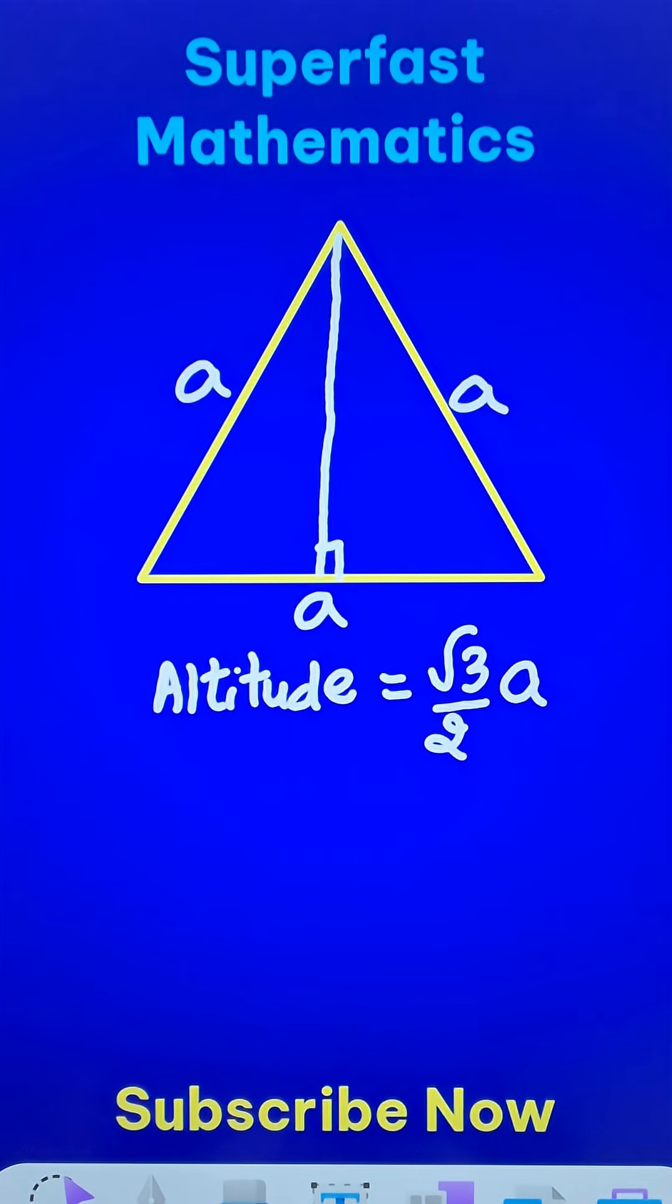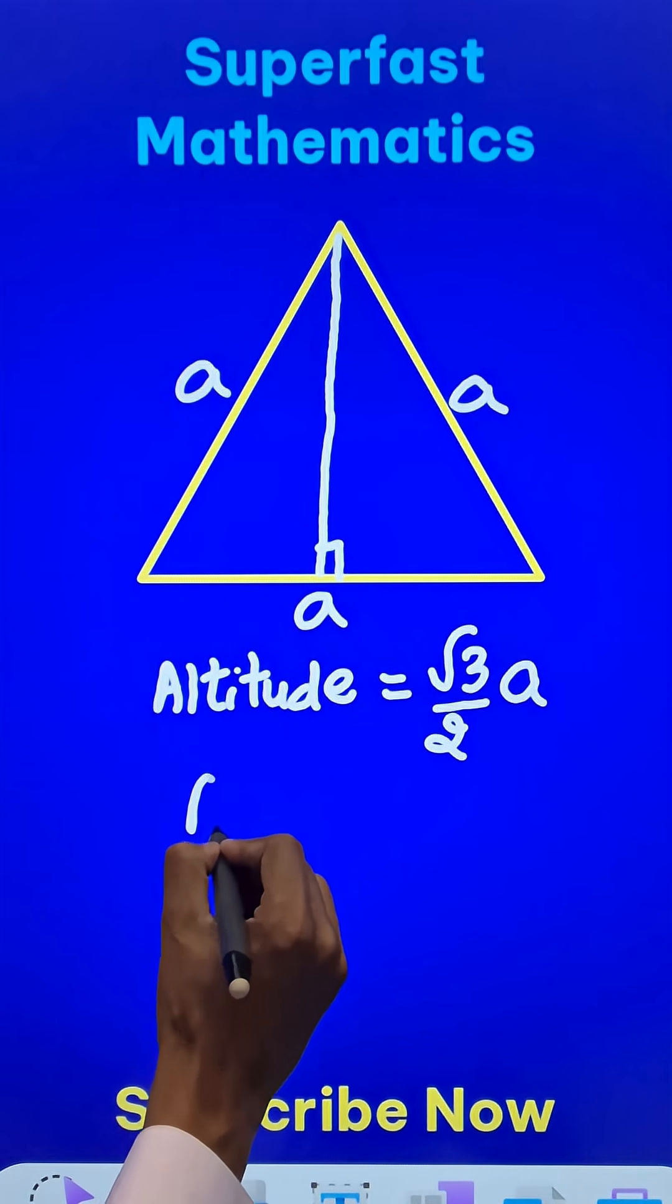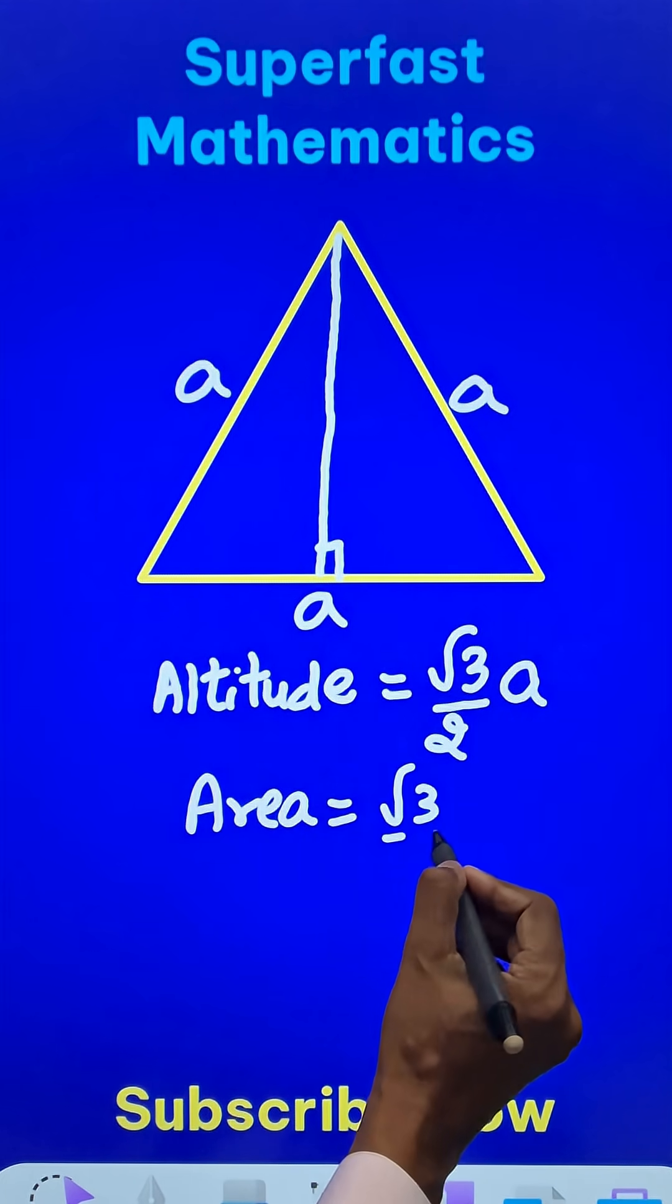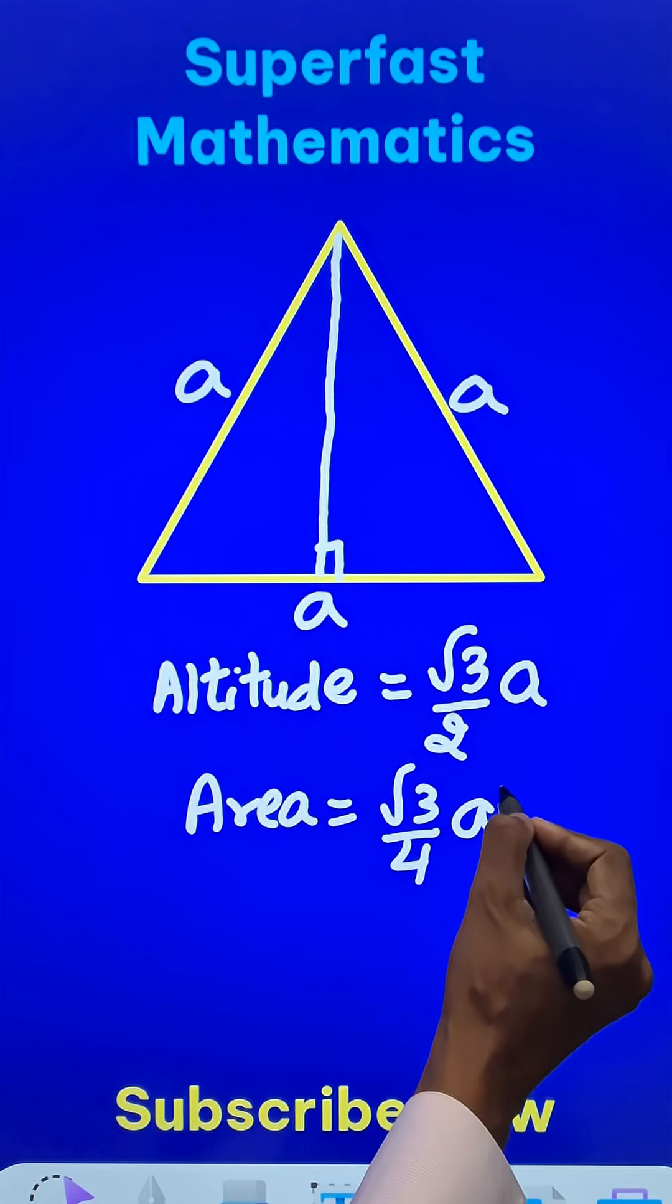Likewise, if you have to find the area of the triangle, then you have to replace this 2 by 4, so √3/4 and square the side, so a².